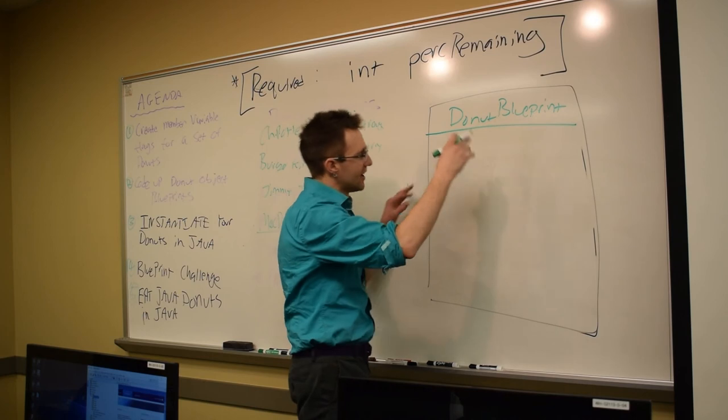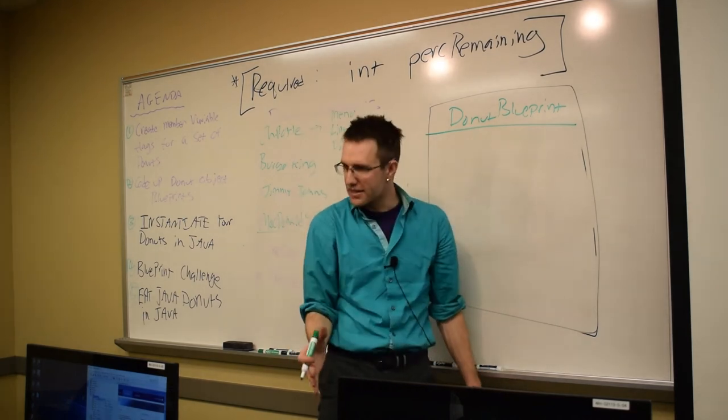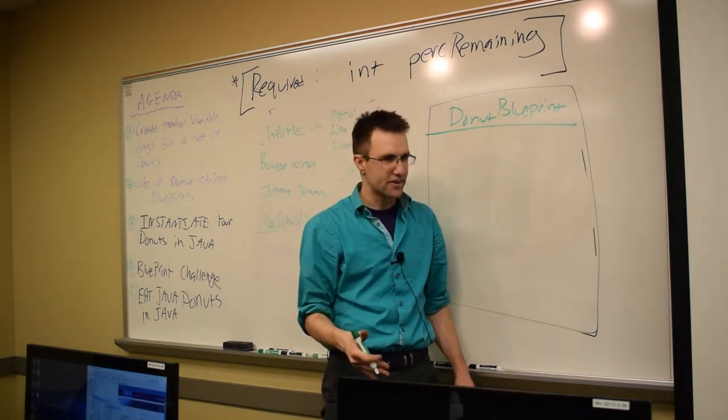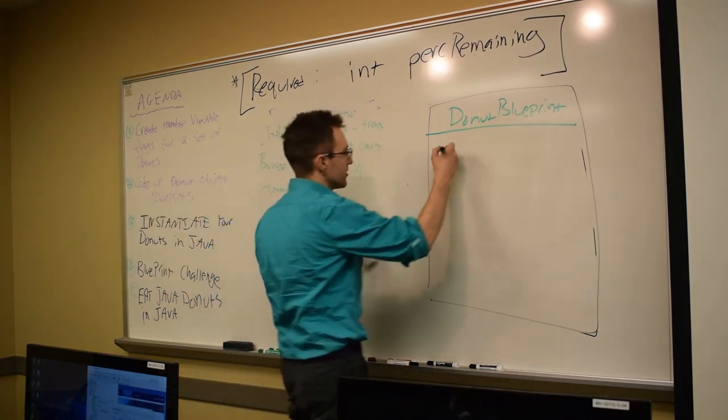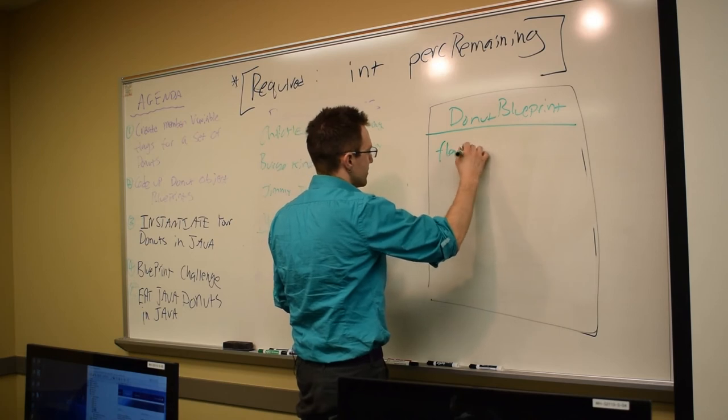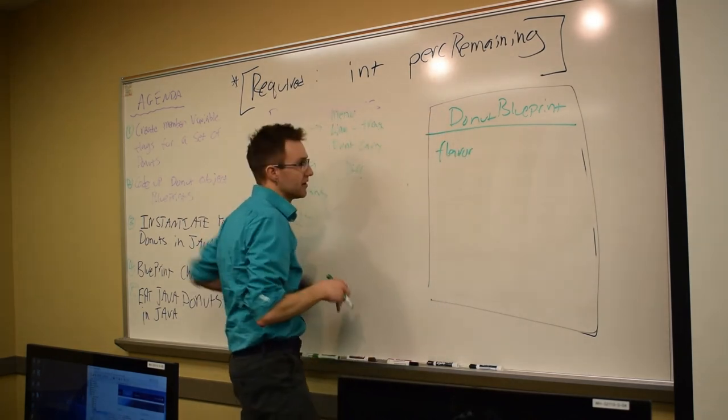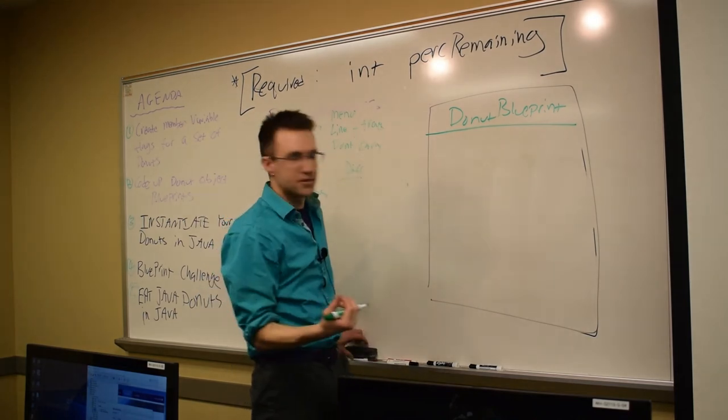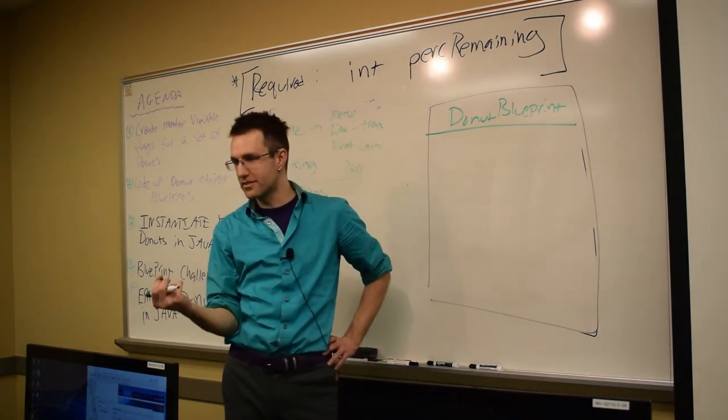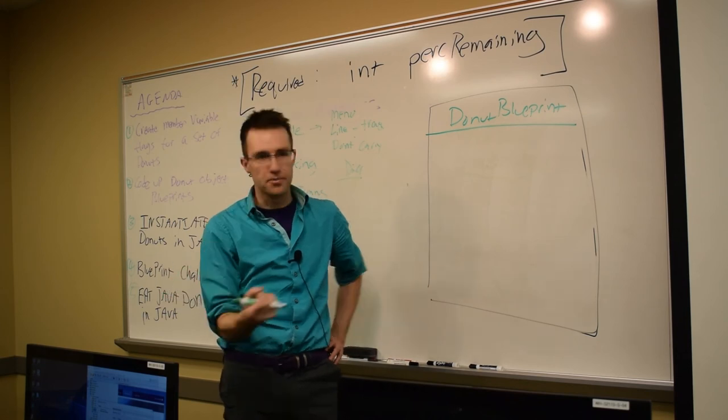Meaning, we're going to say any donut that I make with this blueprint will have the attribute of flavor. Or they all have what? By requiredness. Percent remaining, okay? These are going to become the what's of our donut blueprints.